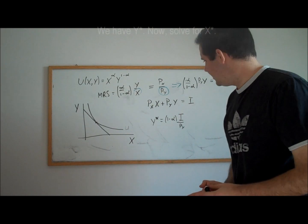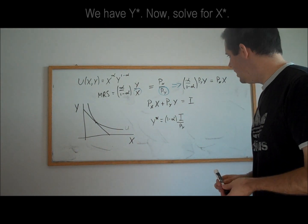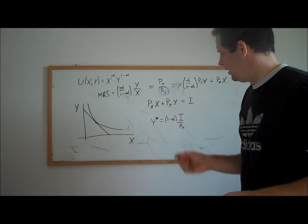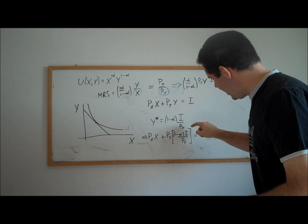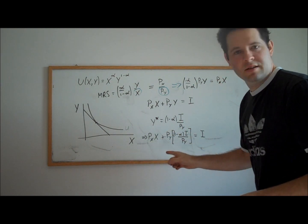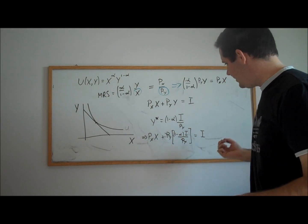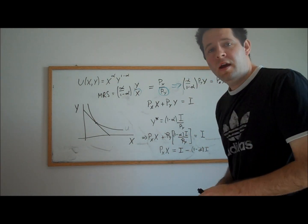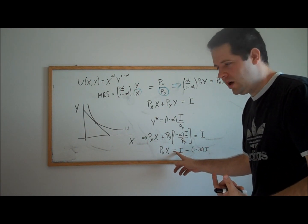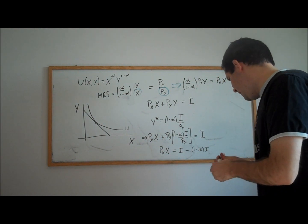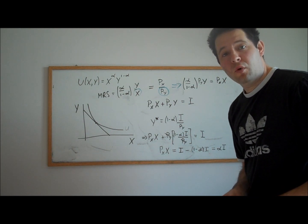Now we use the budget constraint to solve for good x's demand. We plug the demand for good y back into the budget constraint. In the demand for y there is a cancellation with the p_y multiplying it; bringing that term to the right-hand side and looking at the coefficients, the 1 minus alpha cancels with the implicit 1 in front of income, leaving alpha times income on the right-hand side. Dividing by p_x gives us our Cobb-Douglas demand for good x.